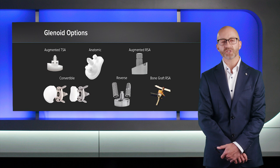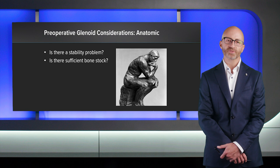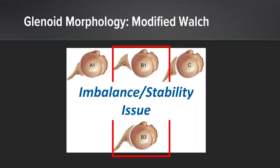On the anatomic side, when I'm addressing primary glenohumeral arthritis, the first two things I ask myself are: is there a stability problem, and is there sufficient bone stock? When we're talking about stability and dealing with B1, B2, and B3 glenoids, we're dealing with an imbalance or stability issue, because we know the natural history is that once the head subluxes posteriorly in a B1-type glenoid, it then wants to become a B2 and subsequently a B3 glenoid.